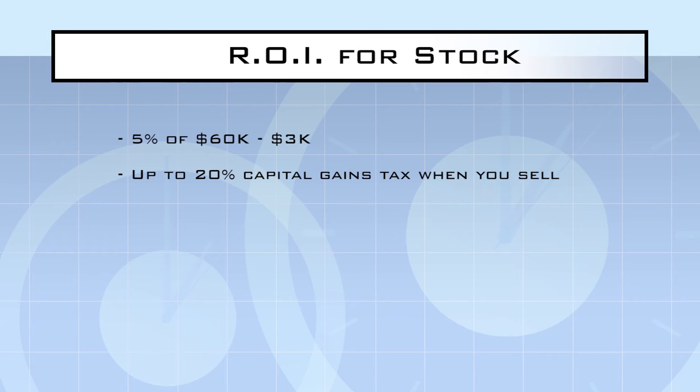Now, if you earn 5% a year on your $60,000 in stocks, that's roughly $3,000 a year. When you sell the stock, assuming you've held the investment for at least a year and it is not being held in a qualified retirement account, you'll pay a maximum of 20% in capital gains tax.